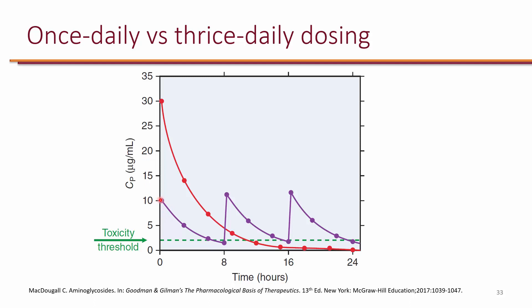This causes an issue because while the peak tells you efficacy, the trough tells you toxicity. No matter how high you go, you have to let the level drop below the trough of 2, because you don't want to cause toxicity — specifically nephrotoxicity and ototoxicity. In traditional dosing every 8 hours, you're hoping the peak was not too high and that there was enough time for the trough to fall below 2.